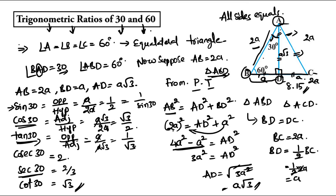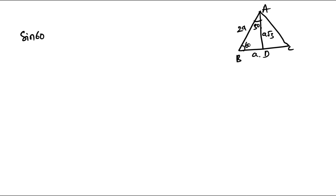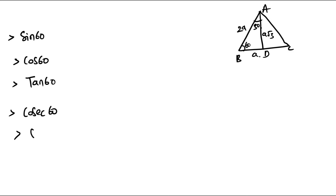We have already completed 45° and 30°. Now we need to find the values for 0° and 90°, and also for 60°. We didn't find 60° values yet, so using the same equilateral triangle, we will now find sin 60, cos 60, tan 60, cosec 60, sec 60, and cot 60.